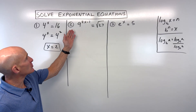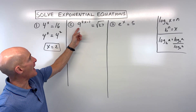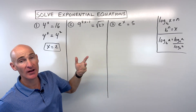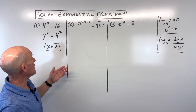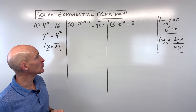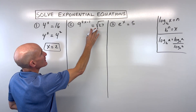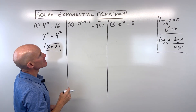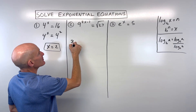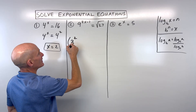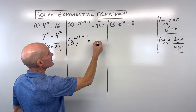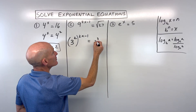Now let's look at number 2. This one's a little different. We have 9 to the 2x minus 1 power equals the square root of 27. Again, we can try to get those bases to be the same and then set the exponents equal. A common base for both of these would be 3. We could say 3 to the second power equals 9, and for 27, that's 3 to the third power.